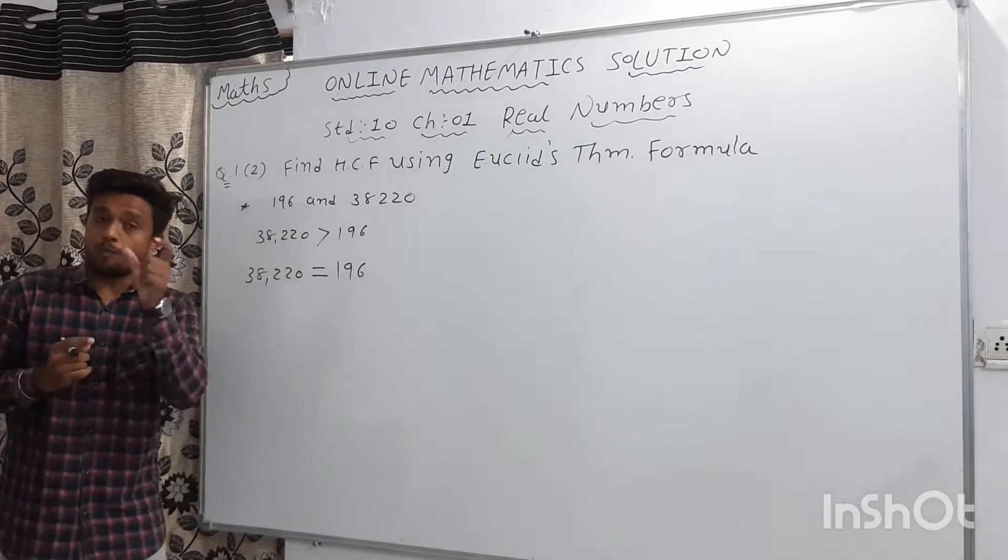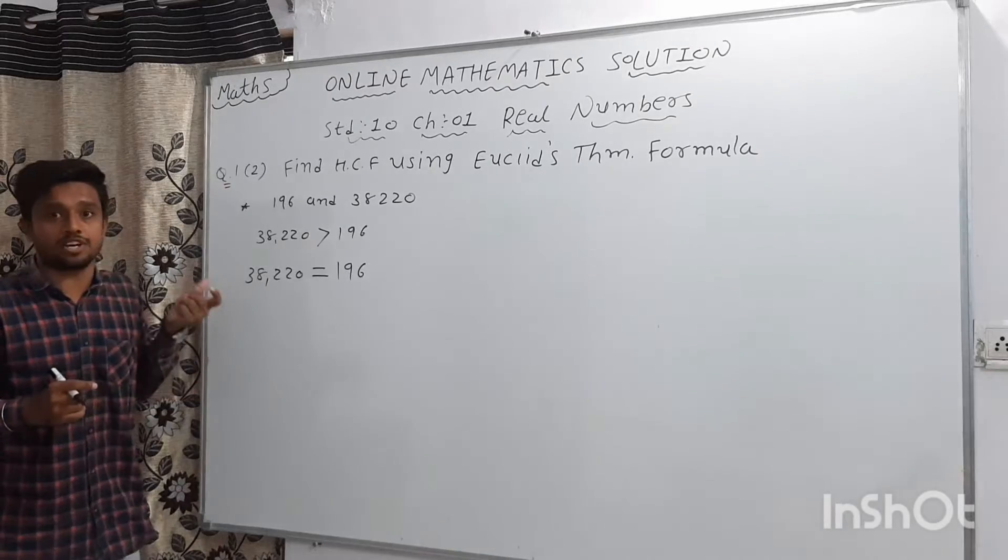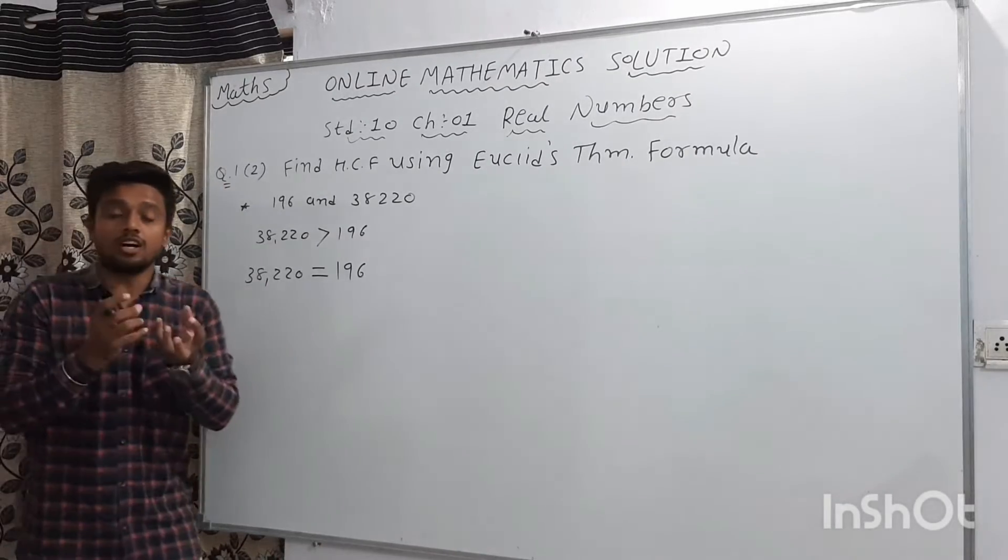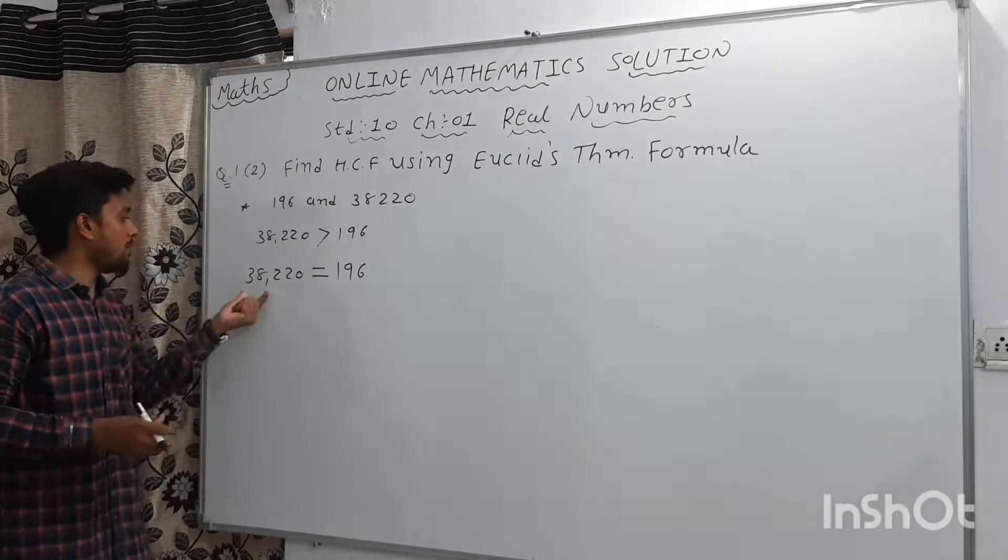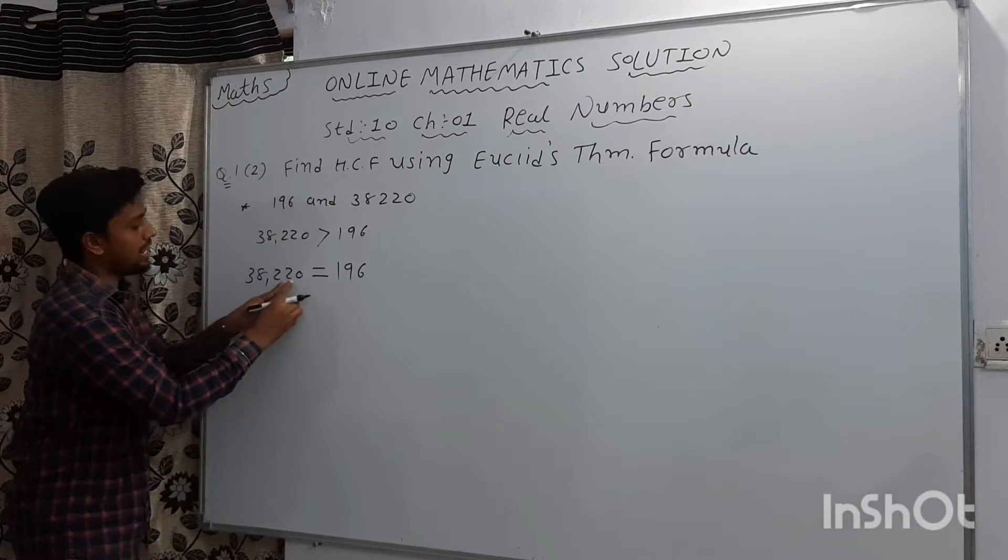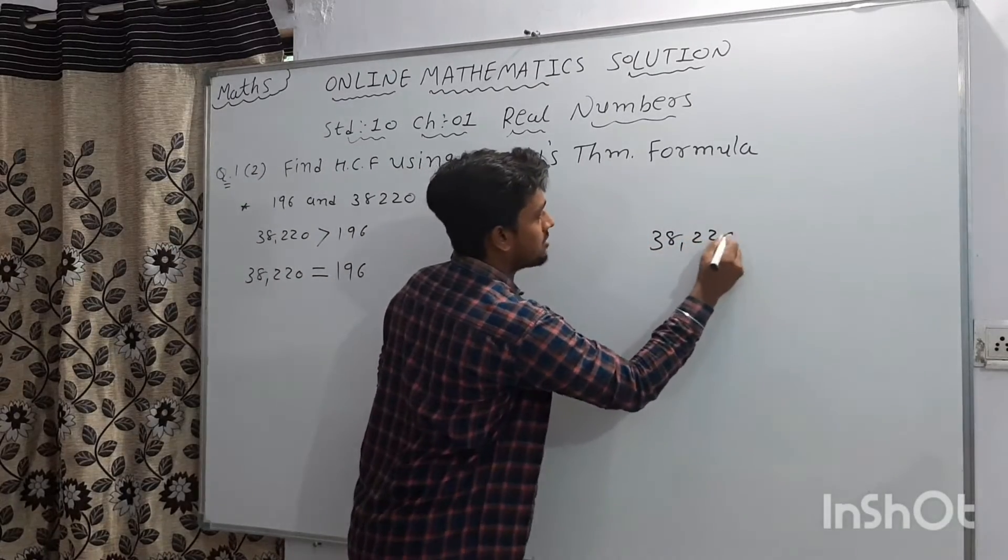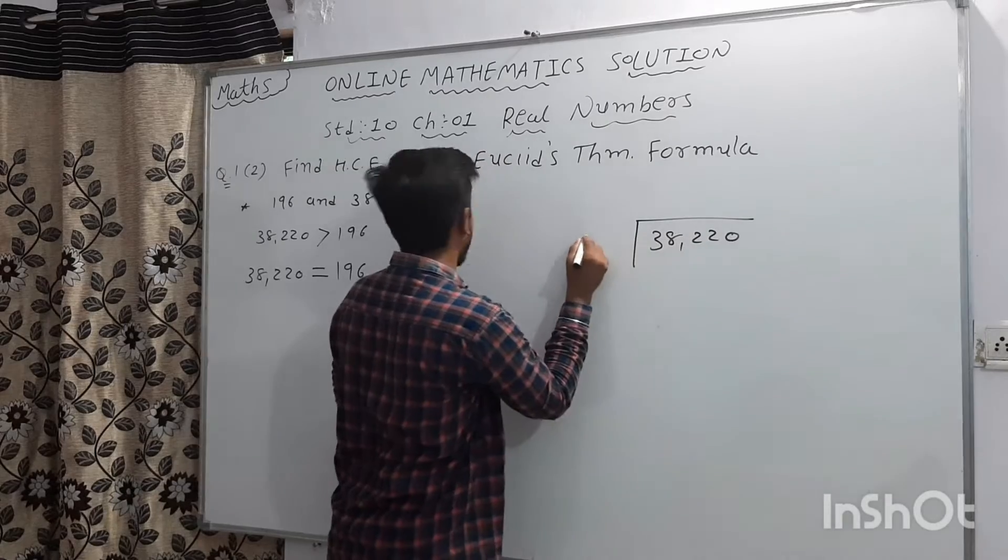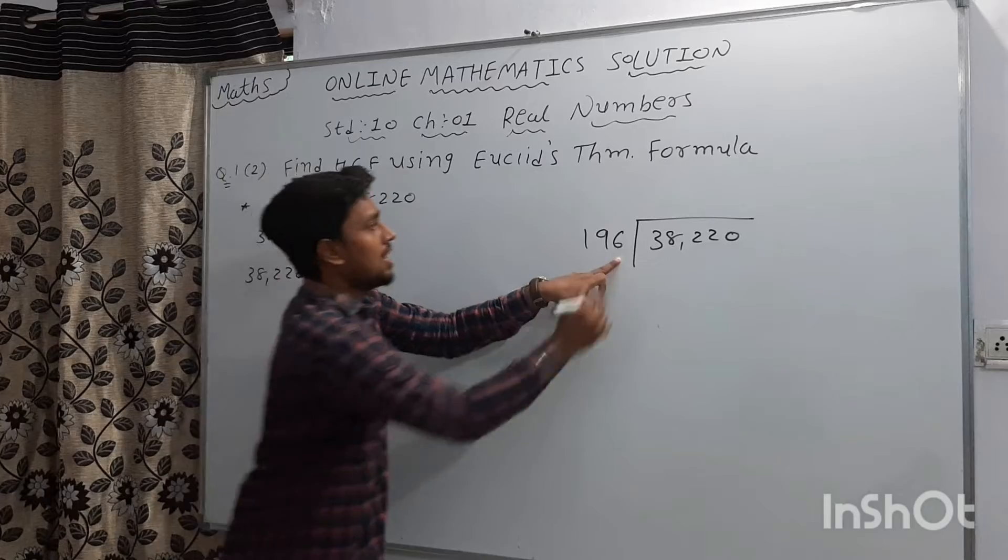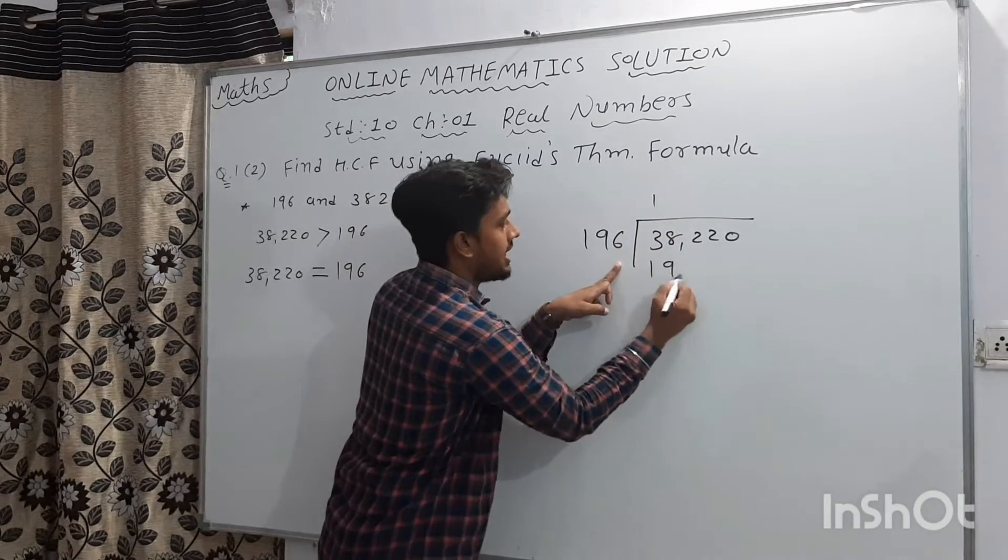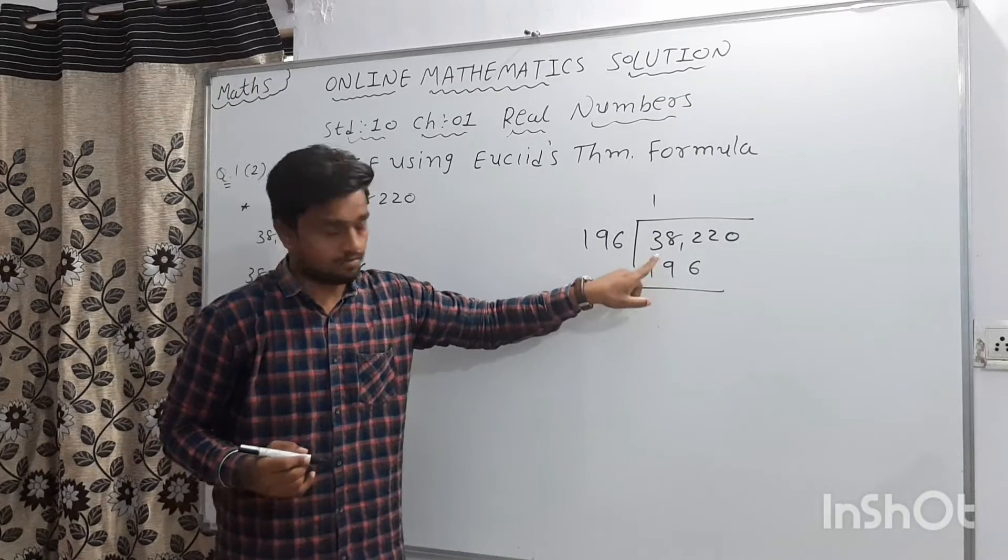We know that the formula we learned about in last lecture, in last sum, section 1.1. Now, the first line is equal to last line. But we have to divide 38,220 divided by 196. We are going to 38,220 divided by 196. We all know that 196, 1196. We have to subtract that.